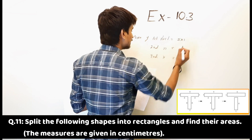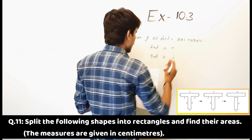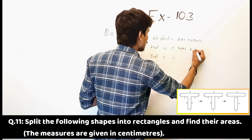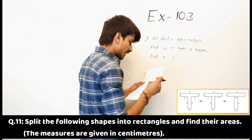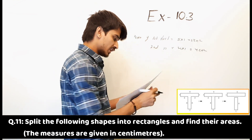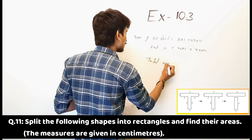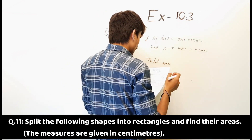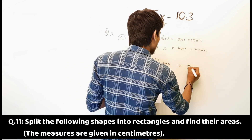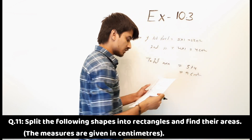Part C: area of first rectangle is equal to 5 multiplied by 1 is equal to 5 centimeter square. Second rectangle is equal to 4 multiplied by 1 is equal to 4 centimeter square. Total area of complete figure is equal to 5 plus 4 is equal to 9 centimeter square.